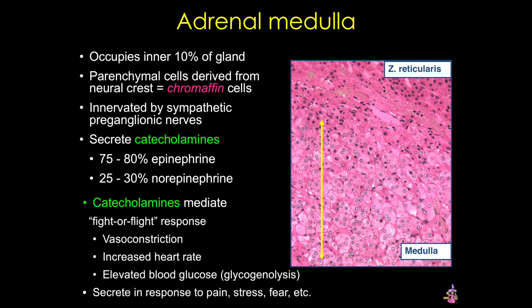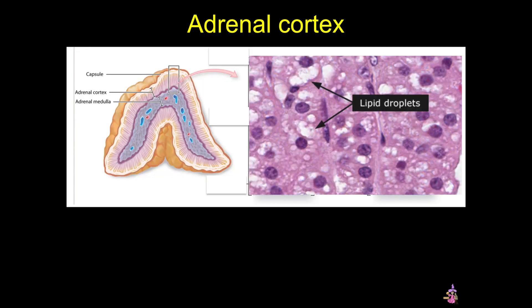The adrenal cortex produces a variety of steroid hormones, and the cells have abundant smooth endoplasmic reticulum, lots of mitochondria, and lipid droplets that store cholesterol. Steroids are synthesized and released on demand, so they're not actually stored in granules. These steroids are lipid-soluble, and so they're released by diffusion through the plasma membrane.